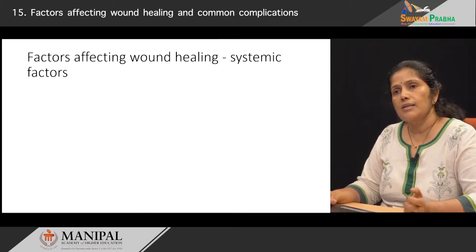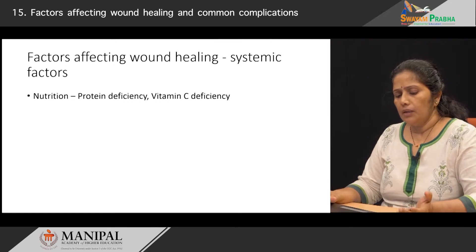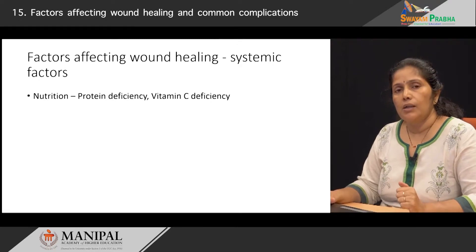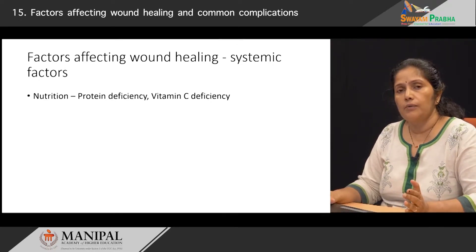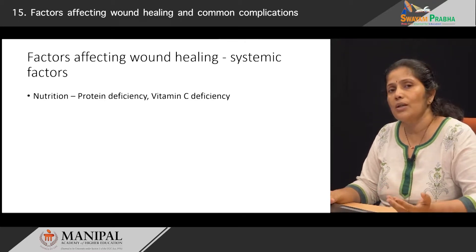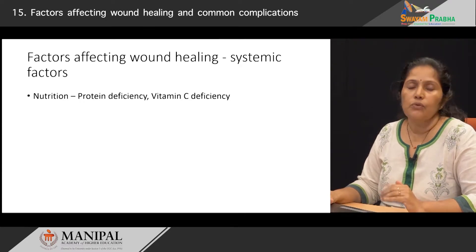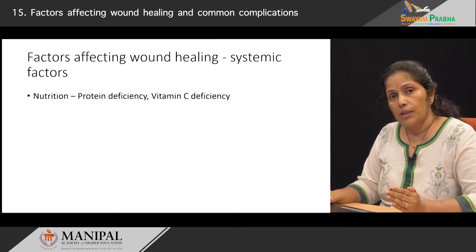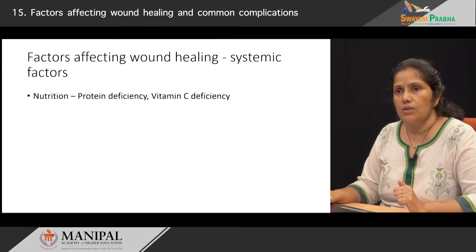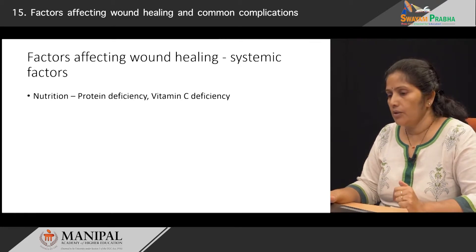Now let us look at some of the systemic factors — diseases that the patient has which can prevent wound healing. Primary importance is nutrition. A good amount of protein is required for proper healing, and vitamin C also improves the healing process. Vitamin C is very important in the formation of collagen, which is an important part of granulation tissue. A good protein diet and adequate vitamin C help in wound healing.